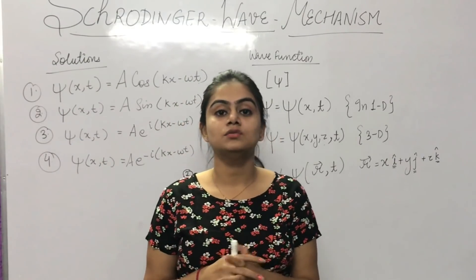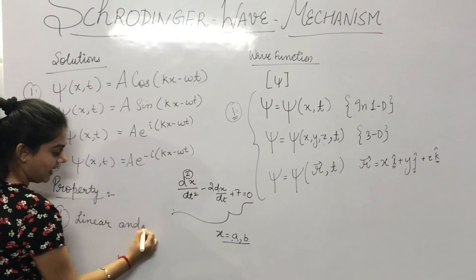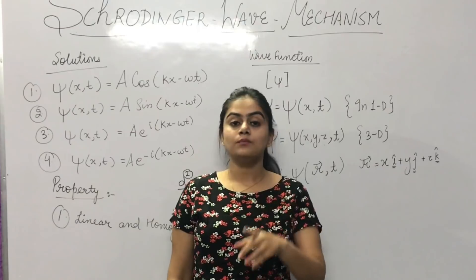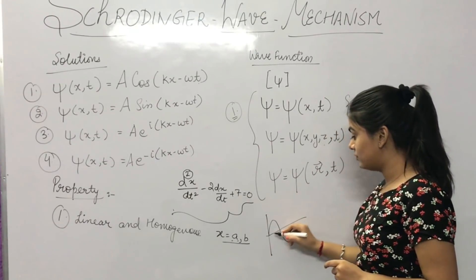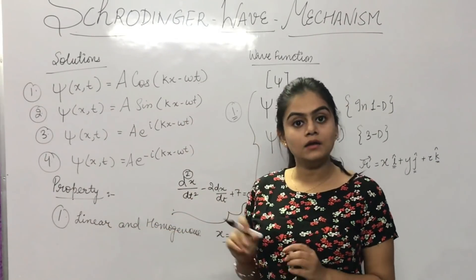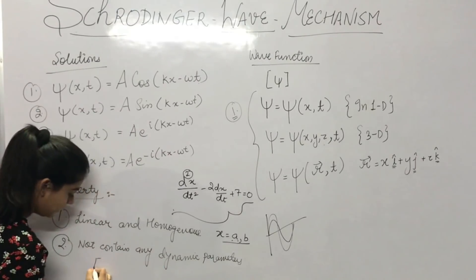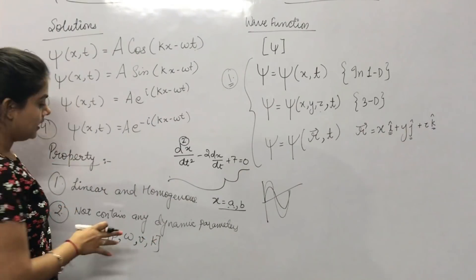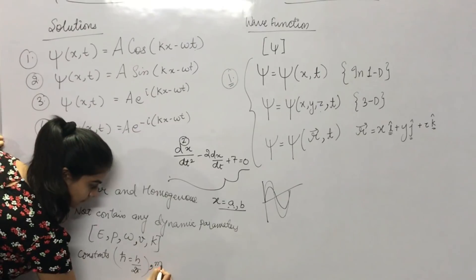Before proceeding, the wave function must be linear and homogeneous. This is because every wave has the property that waves superimpose on each other, so the wave function must be linear and homogeneous. The second property is that the Schrödinger equation should not contain any dynamic parameters like energy, momentum, omega (frequency), velocity, or propagation factor. It must only contain constants such as h-bar (h upon 2pi) and mass.